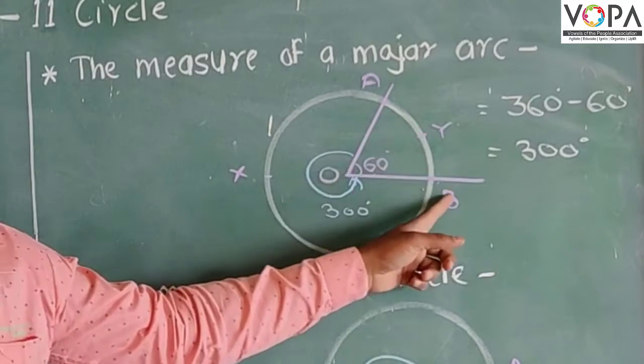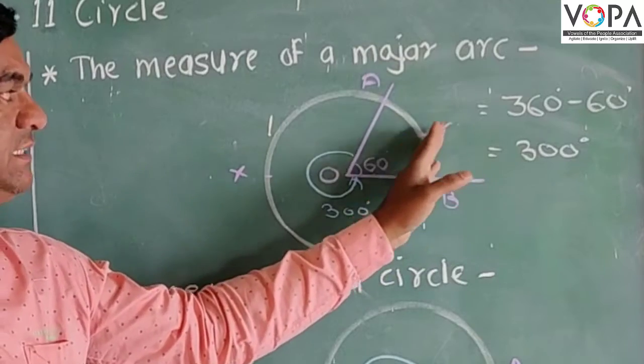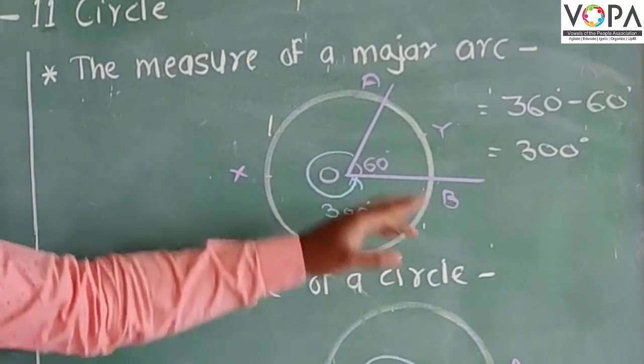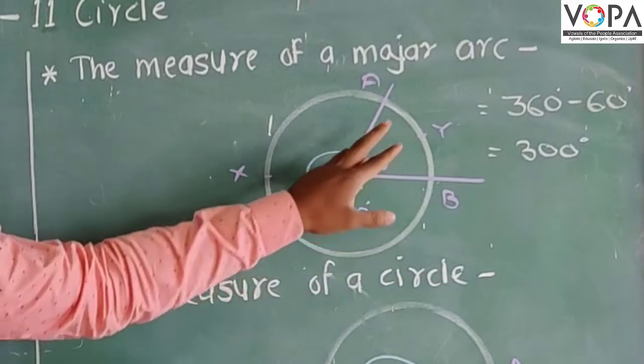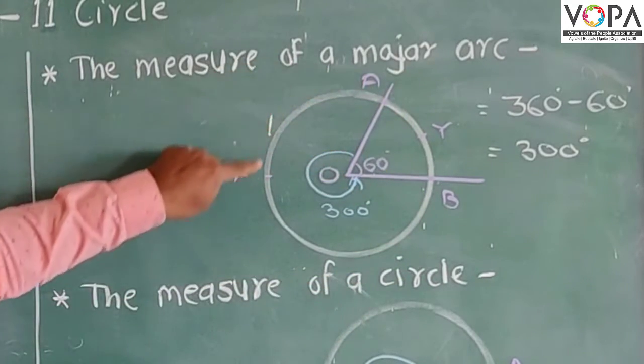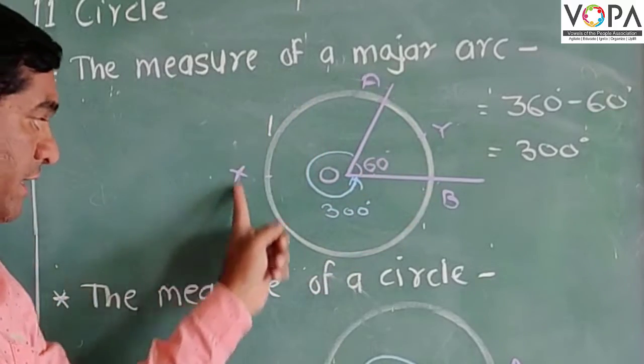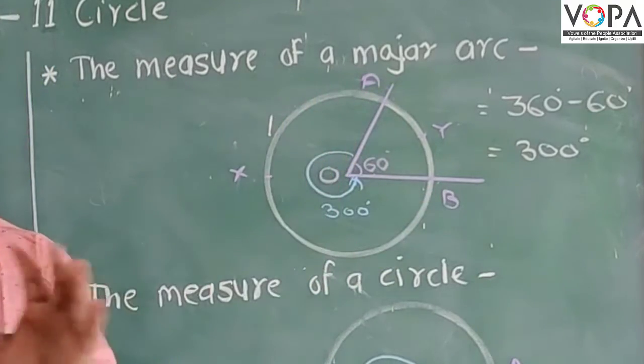Angle for arc AYD is given as 60 degrees. AYD is equal to angle AOB is given as 60 degrees. So we want to find the major arc AXD is a major. So how to find it?